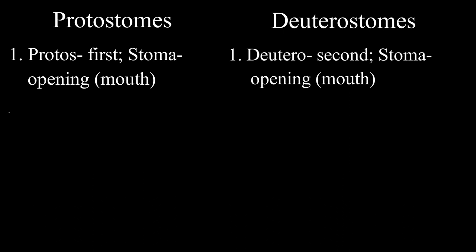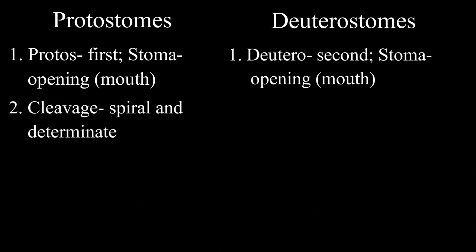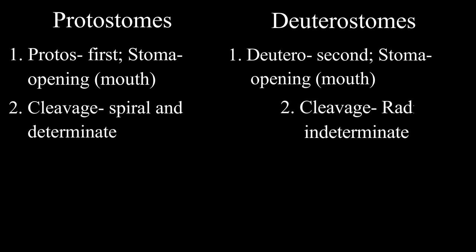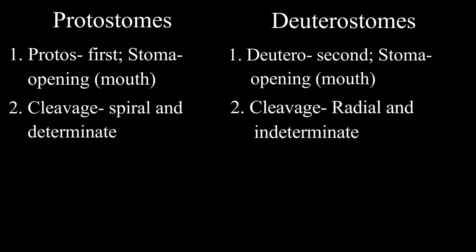Protostome embryos undergo spiral cleavage, meaning dividing cells are offset from each other, and determinate cleavage, meaning cell fate is precisely determined. Deuterostomes, on the other hand, show radial cleavage, where cells align with each other, and indeterminate cleavage, meaning cell fate is not precisely determined.